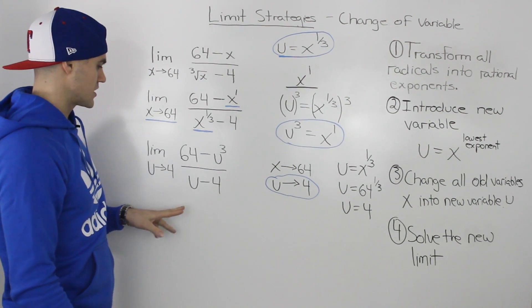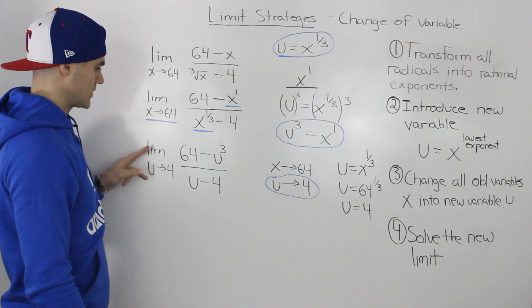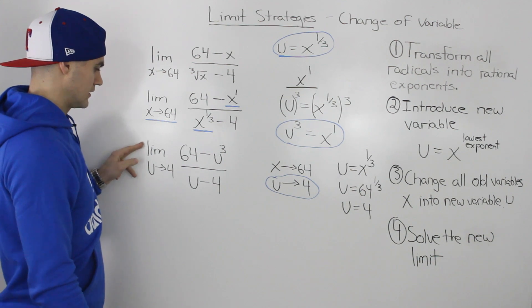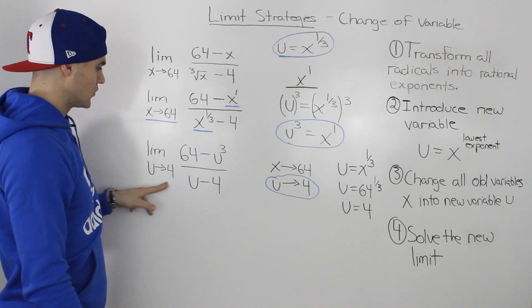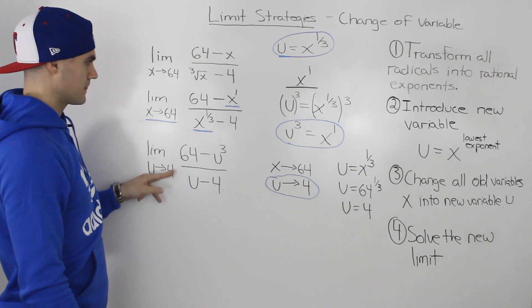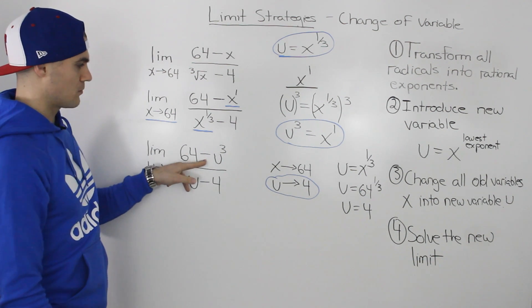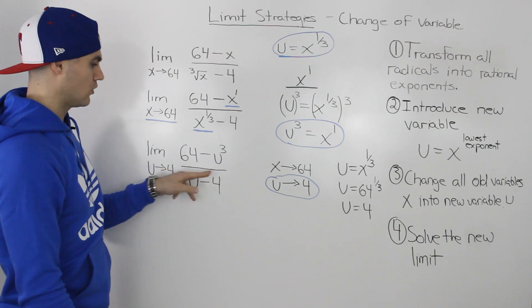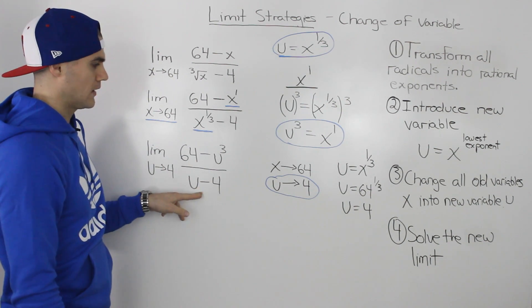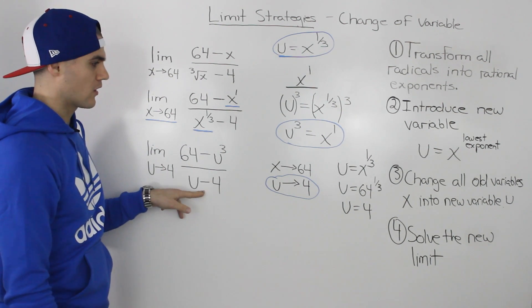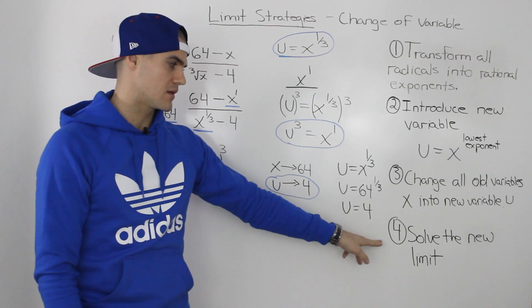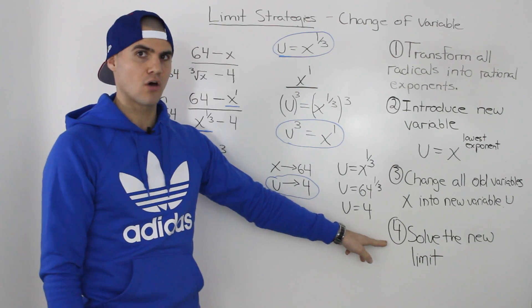Making those substitutions, we get a brand new limit: the limit as u approaches 4 of (64 minus u cubed) all over (u minus 4). This new limit has no rational exponents, and we can solve it with factoring.